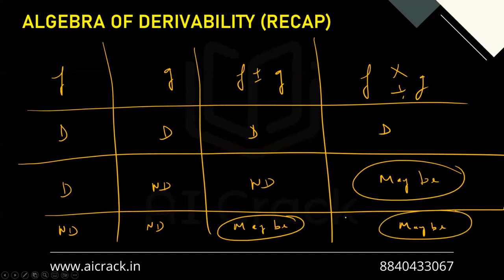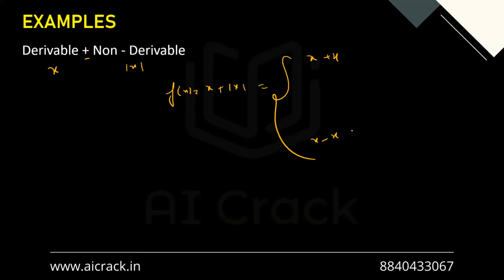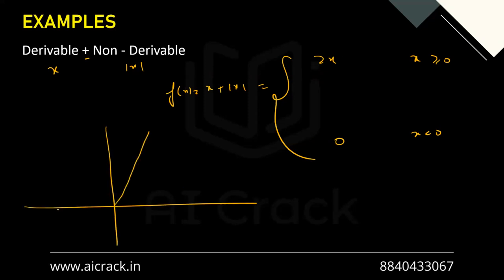Let's illustrate Case 2 with F(x) = x (differentiable) and G(x) = |x| (non-differentiable). Take F(x) = x ± |x|. This opens to 2x when x > 0 and 0 when x < 0. Plotting this, the slope is 2 on the right side and 0 on the left side, so the left-hand and right-hand slopes don't match. The function is non-differentiable — confirming differentiable plus non-differentiable gives non-differentiable.